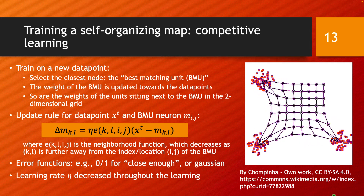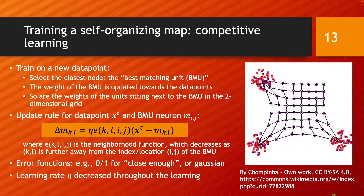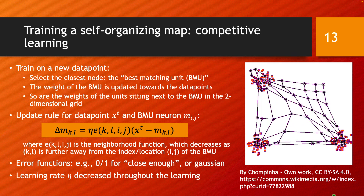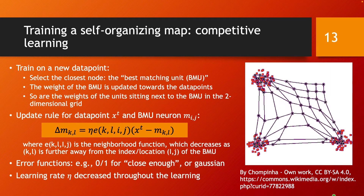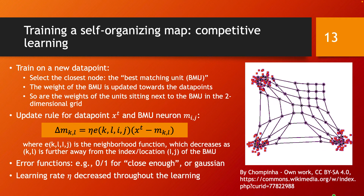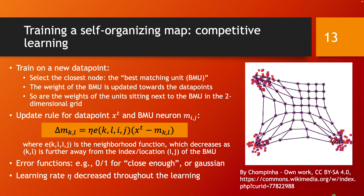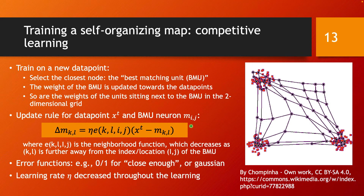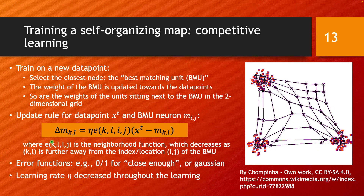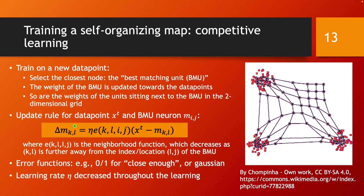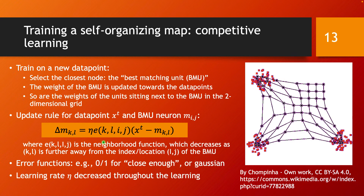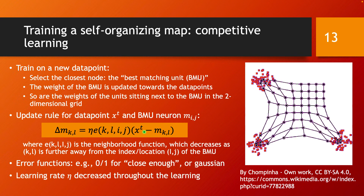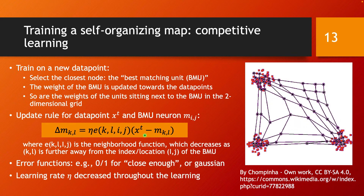The update rule for data point X and best matching unit neuron M_IJ uses two indices I and J to highlight that we are dealing with a 2D topological map. I and J are the coordinates of the BMU on the X and Y axes. For all neurons in the self-organizing map, the neuron at index K,L is updated as a function of how far that new data point is from the neuron in the D-dimensional space.